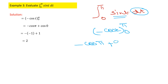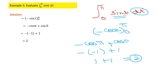Substituting the lower limit 0: cos(π) equals minus 1, and cos(0) equals 1. So minus times (minus 1) gives plus 1, and 1 plus 1 gives 2 as the final answer.